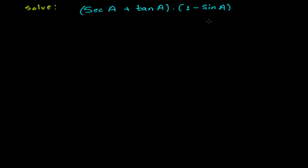Hello friends, here we have a trigonometric expression: sec A plus tan A, multiplying 1 minus sine A. We need to solve this and get the final value, so let's go.